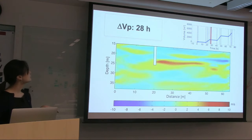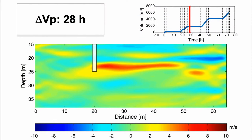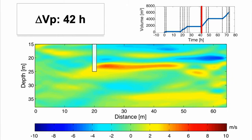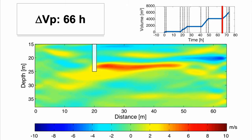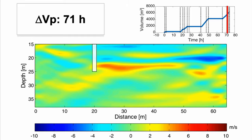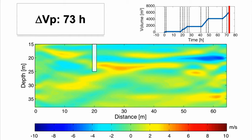At 26 hours and 28 hours, we see a velocity increase — we're injecting microbubble water. At 42 hours, we start to see some velocity decrease, then increase again, and some fluctuation in the velocity structure. At the very end of the injection, velocity starts to decrease, and at the very end, it moves back almost to the starting value.